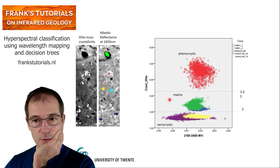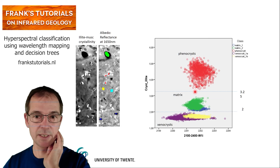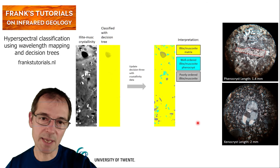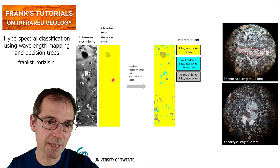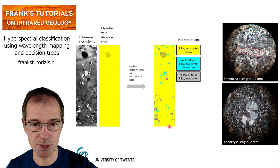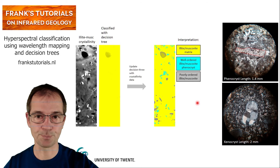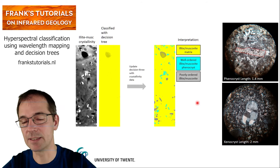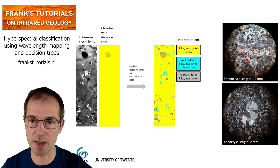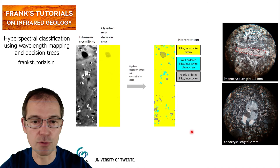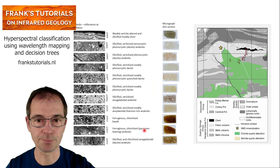We can then slice the illite crystallinity values using thresholds at approximately 3.25 and 2. When we do that, instead of a homogeneously yellow image, we get a classification showing the matrix in yellow, well-ordered illite-muscovite phenocrysts in cyan, and poorly ordered illite-muscovite in gray. Comparing with thin section analysis makes sense — the phenocrysts have a different shape than the more rounded xenocrysts. This improvement nicely shows the volcanic texture in the rock.